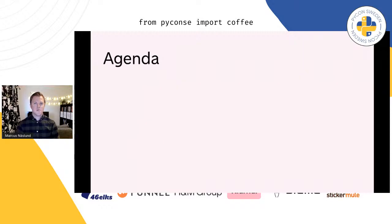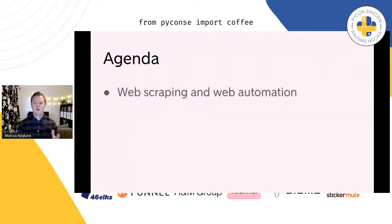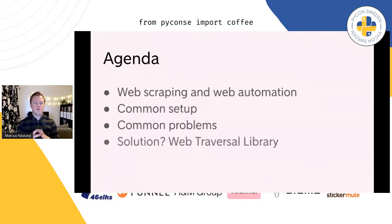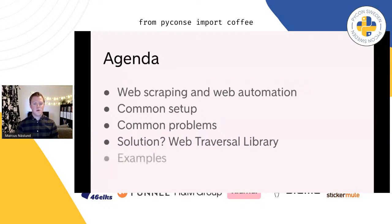For the next 20 or so minutes, we're going to look at how one usually sets up these web automation projects, along with some common problems in this field. And then we'll talk about the solution to some of these problems, which is the Web Traversal Library, or WTL. We'll look at what that is and what it can do for web automation projects, along with some examples.